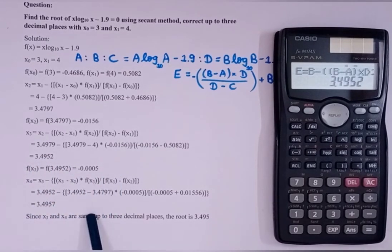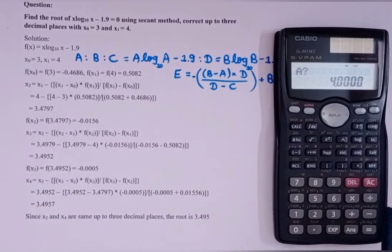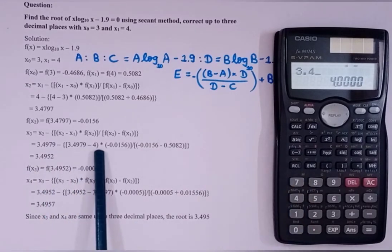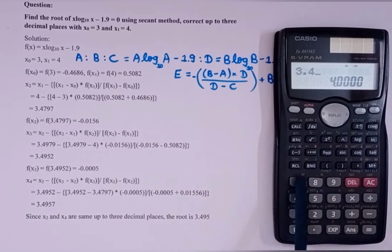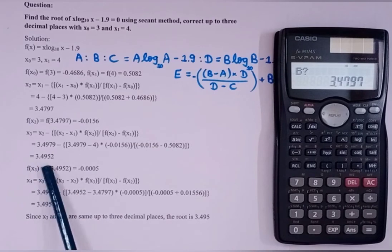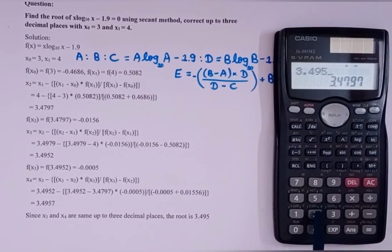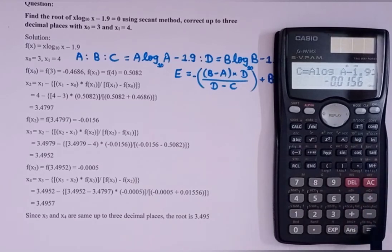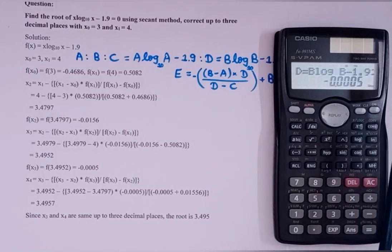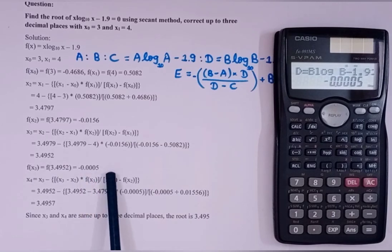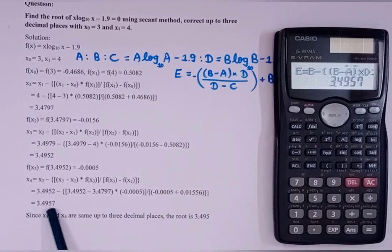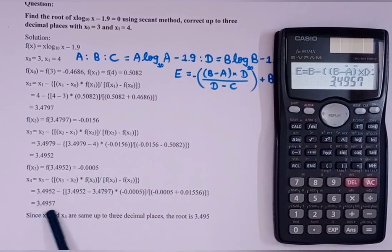Now a will be equal to 3.4797. Press equal to equal to, and b is 3.4952, so enter 3.4952 and press equal to equal to. We already know c is -0.0156. We get f(x₃) as -0.0005. Press equal to and we get x₄ = 3.4957. Since the question asks for 3 decimal places, x₃ and x₄ are the same up to 3 decimal places, so the root of the equation is 3.495.